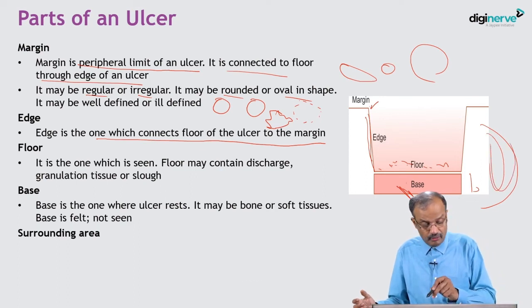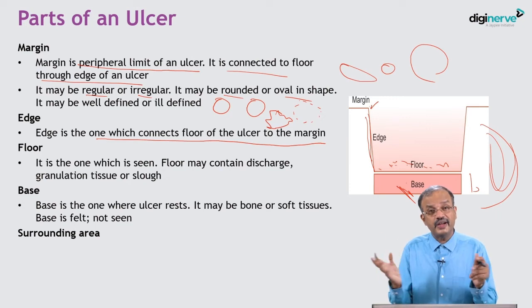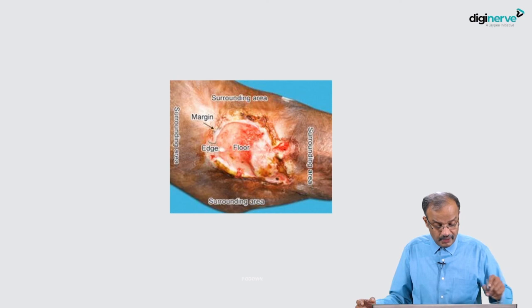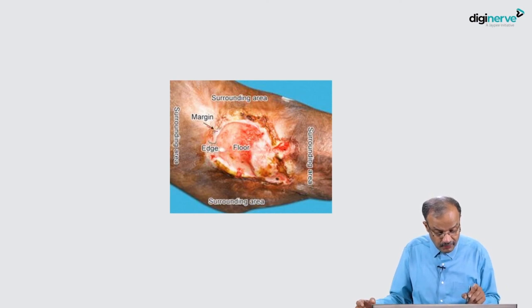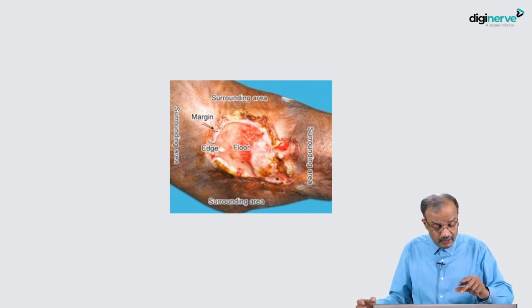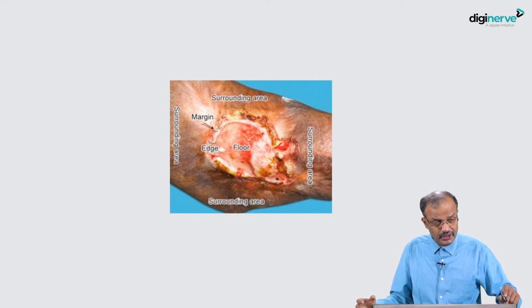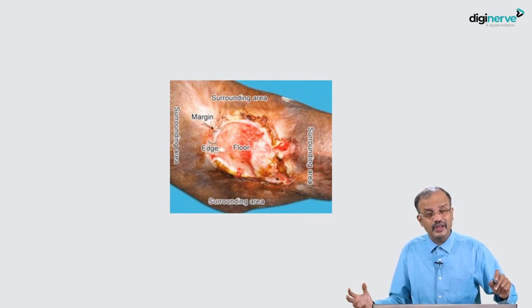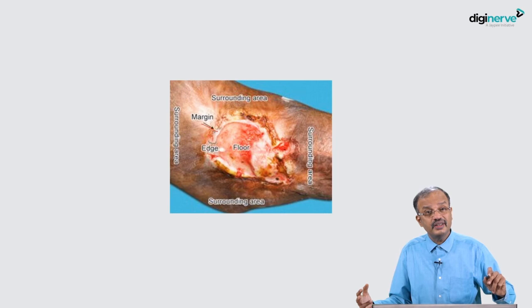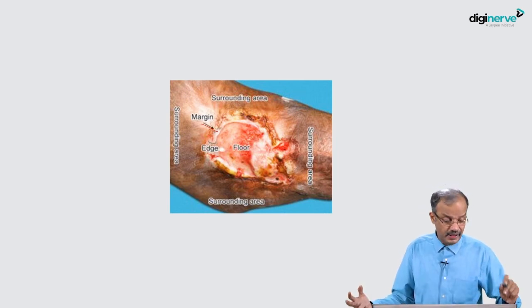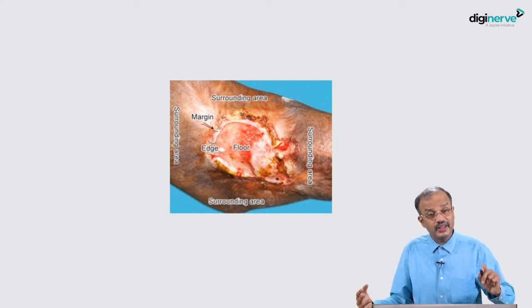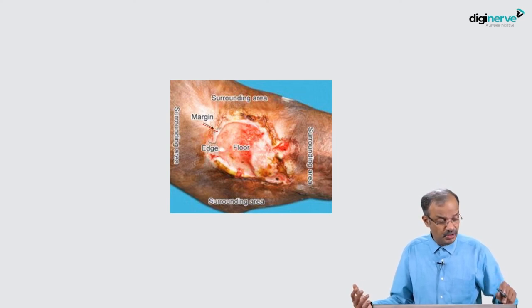The surrounding area is also important because it gives added information when you examine the patient clinically. To summarize what is seen versus felt: floor can be seen and felt; edge can both be inspected and palpated; surrounding area is seen and felt. Base is only felt, not inspected. Margin is usually inspected and seen - it is difficult to feel, though sometimes possible, but usually not felt.